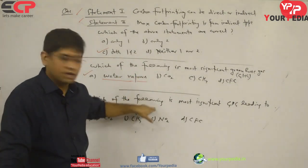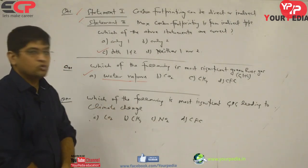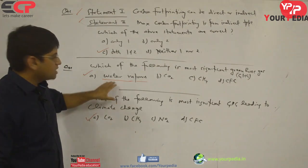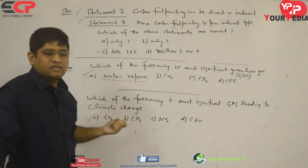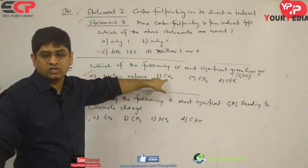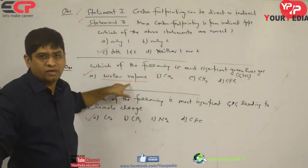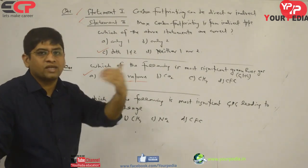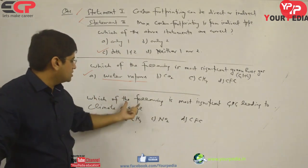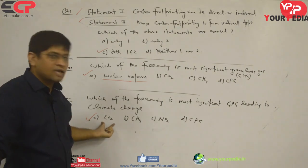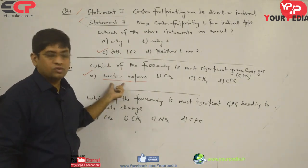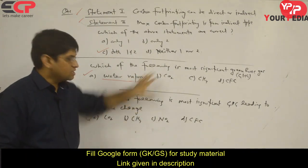A similar question: which is the most significant greenhouse gas leading to climate change? Here water vapor is not given as a choice, so the answer is carbon dioxide. If both choices were given, it would be tricky — because before industrialization, when carbon dioxide was not burned, weather was naturally balanced. Water vapor caused the greenhouse effect but not climate change. Carbon dioxide is the gas leading to climate change. Water vapor traps maximum energy, but CO₂ drives climate change.